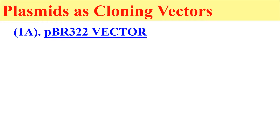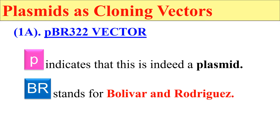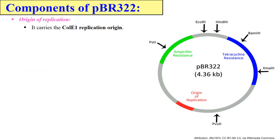The pBR322 vector: here 'P' stands for plasmid, 'BR' stands for the scientists who made it — that is Bolivar and Rodriguez — and '322' is a strain number given to the plasmid. It distinguishes this plasmid from other plasmids made in the same laboratory, like pBR322 and pBR323. So this number distinguishes one plasmid from another developed in the same laboratory.